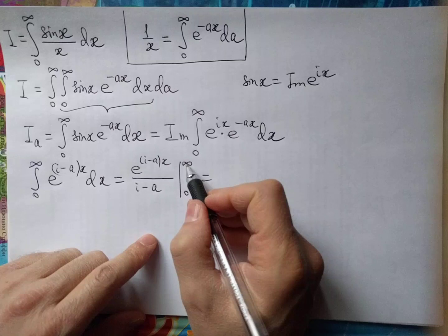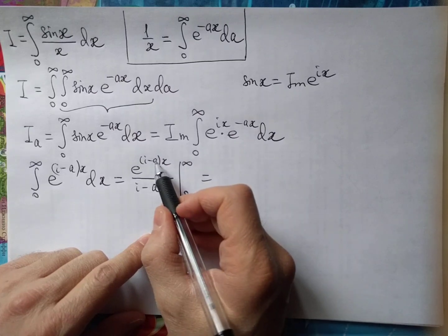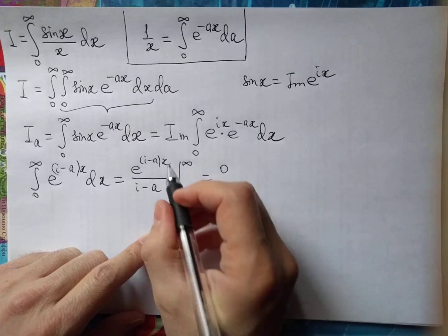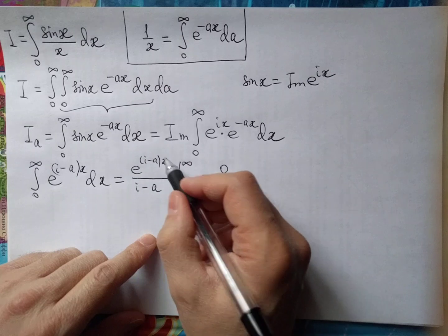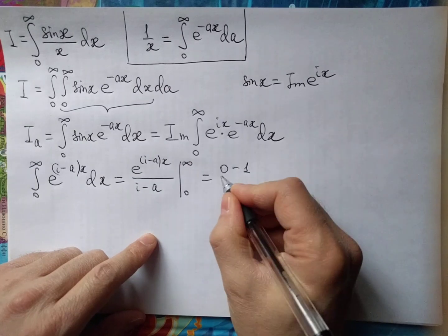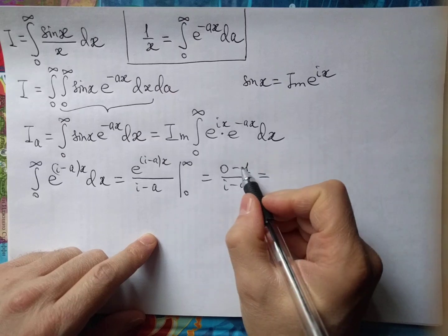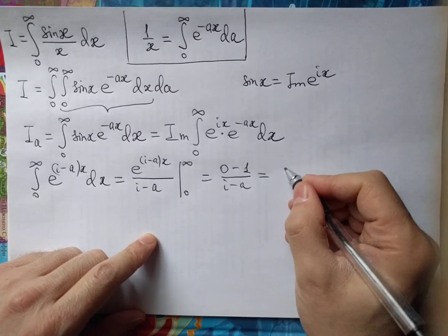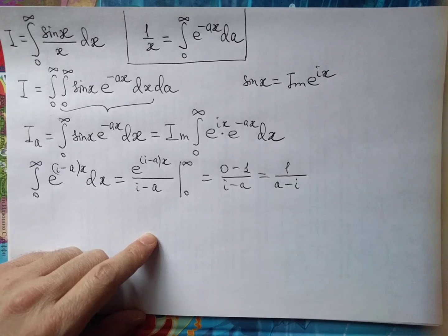Evaluating in the upper limit we will have 0 because we consider positive a, and when x equals 0 we'll have exp from 0 which equals 1. And finally minus 1 over this we may rewrite in such form.